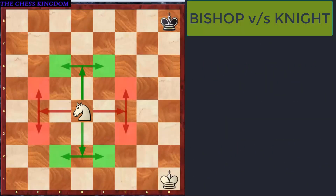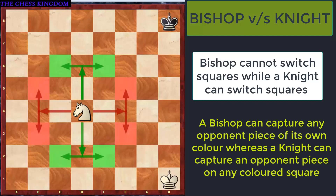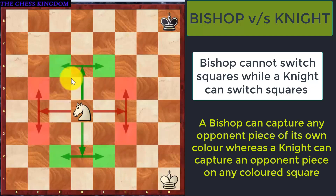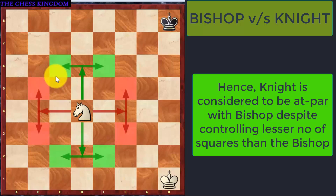Secondly, a Bishop cannot switch squares during the game — a white colored Bishop will always remain on the white squares and can only capture pieces on white squares. But if you observe this Knight, it has the possibility of switching over the squares. Right now it is occupying a dark colored square; in the next move it can occupy a highlighted square and come over the white square — again on the black, again on the white. This means it can switch squares in addition to being able to jump. That is the main reason it is considered at par with the Bishop even though it controls only 8 squares.